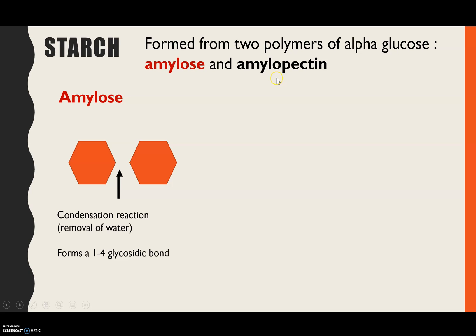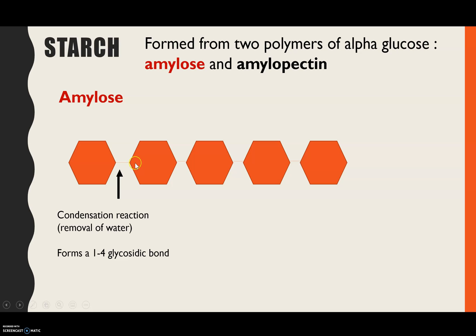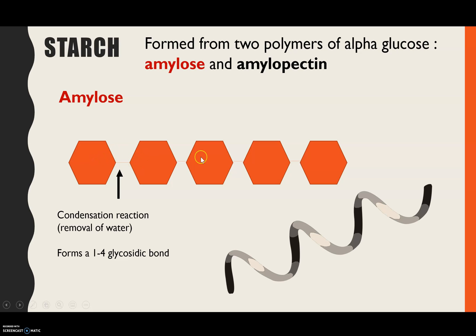Looking at amylose first: it's created by condensation reactions. The glycosidic bond forms between carbon 1 and carbon 4, and this happens repeatedly because it's a polymer. That unbranched chain of amylose coils up to make a helix — that is the structure of amylose.